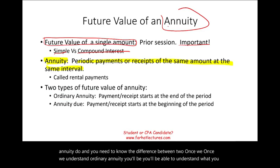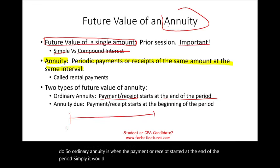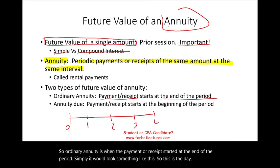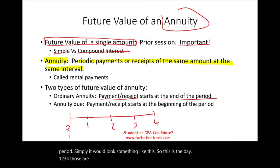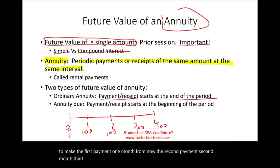An ordinary annuity is when the payments or receipts start at the end of the period. So this is day zero, then periods one, two, three, four. Nothing happens at point zero. For example, you have to make the first payment one month from now, the second payment the second month, third month, and fourth month.